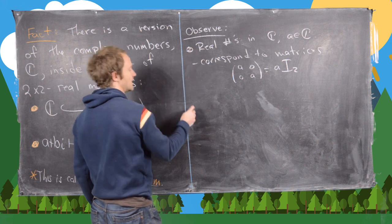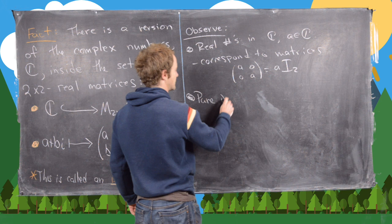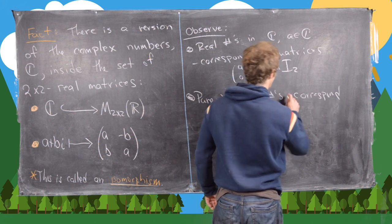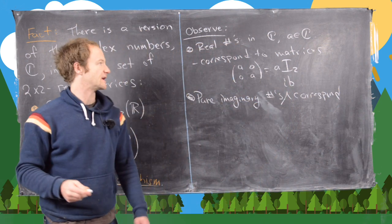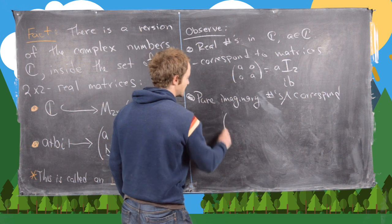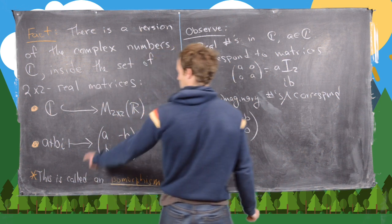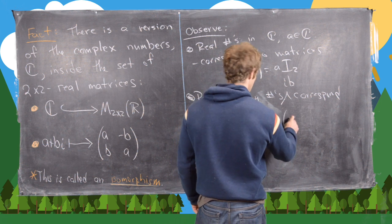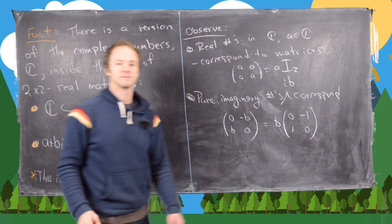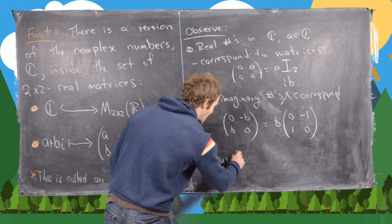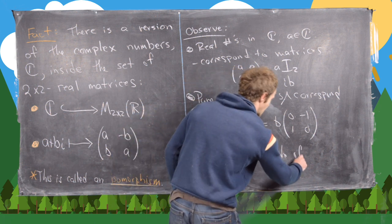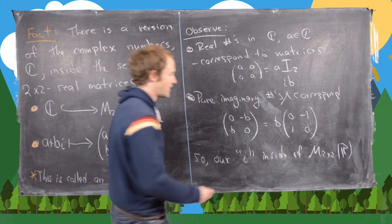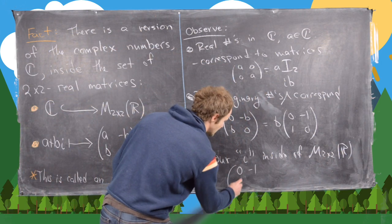Pure imaginary numbers are of the form i·b where b is a real number. Those correspond to matrices of the form [0, -b; b, 0], which equals b times the matrix [0, -1; 1, 0]. So our i inside the set of matrices M_{2×2}(ℝ) is the matrix [0, -1; 1, 0].